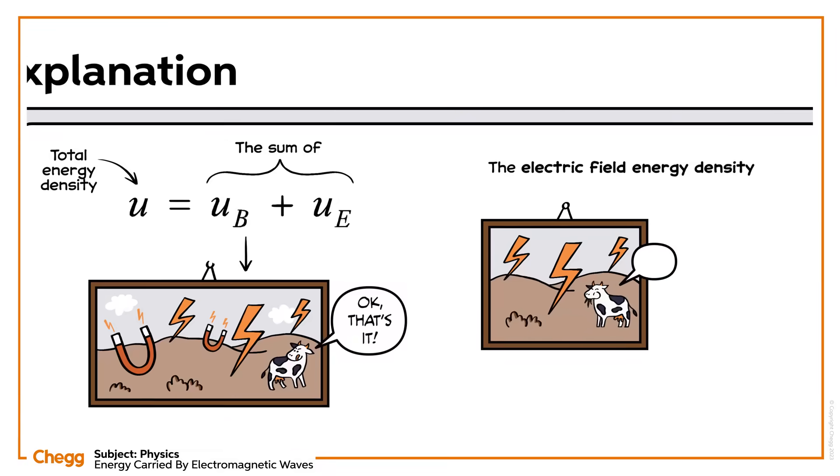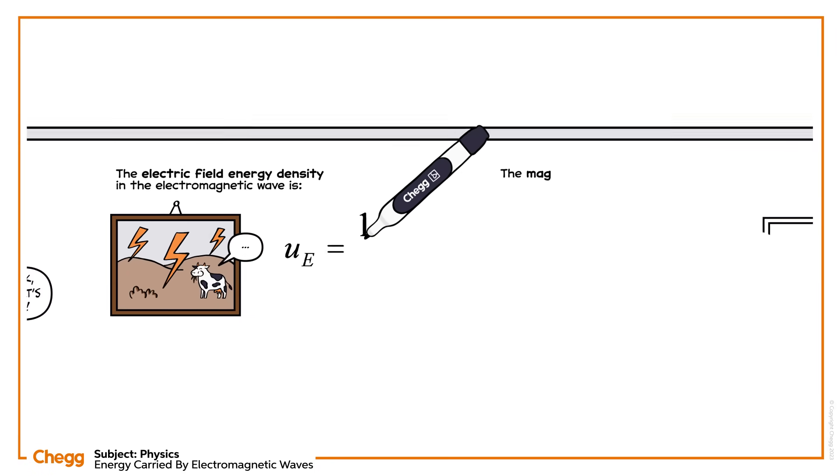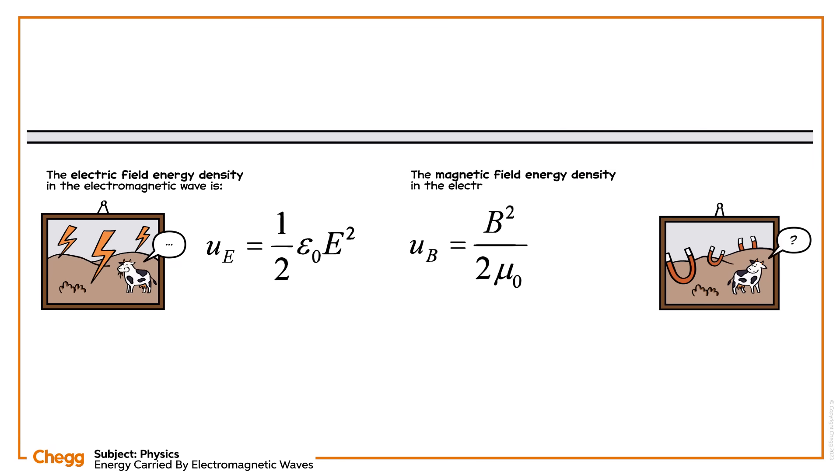The electric field energy density in the electromagnetic wave is given by this expression. Here E is the electric field strength, B is the magnetic field strength, epsilon naught is the permittivity of free space, and mu naught is the permeability of free space.